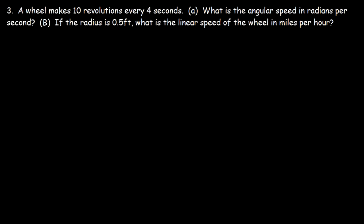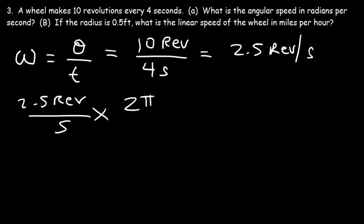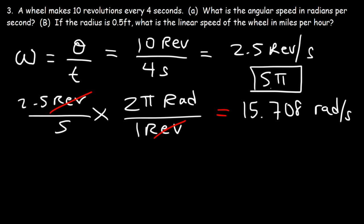Example 3, Part A: A wheel makes 10 revolutions every 4 seconds. What is the angular speed in radians per second? Angular speed = angle ÷ time = 10 revolutions ÷ 4 seconds = 2.5 revolutions per second. Converting to radians: multiply by 2π radians per revolution; revolutions cancel. That gives 2.5 × 2π = 5π, or approximately 15.708 radians per second.